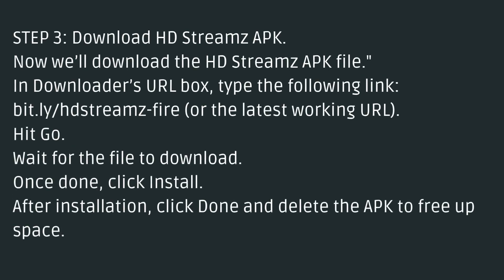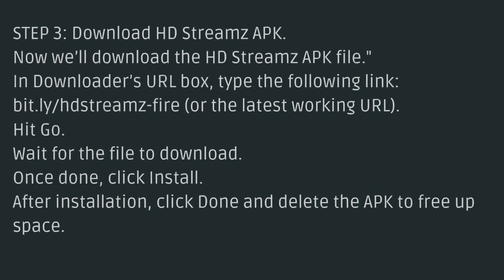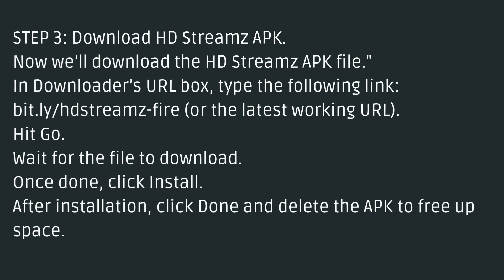Step 3: Download the HD Streams APK. Now we'll download the HD Streams APK file. In Downloader's URL box, type the following link: bit.ly/hdstreams-fire, or the latest working URL. Hit Go and wait for the file to download. Once done, click Install.